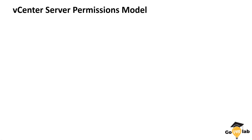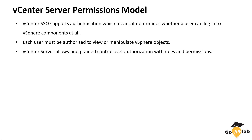Now let's understand the vCenter Server Permissions Model. vCenter single sign-on supports authentication, which means it determines whether a user can log in to vCenter components at all. Each user must be authorized to view or manipulate vSphere objects. vCenter Server allows fine-grained control over authorization with roles and permissions, giving us role-based access control capabilities to secure our vCenter Server inventory objects.